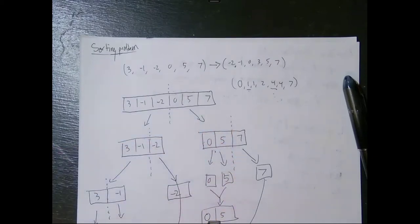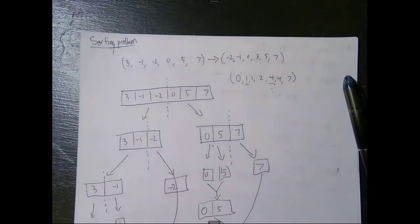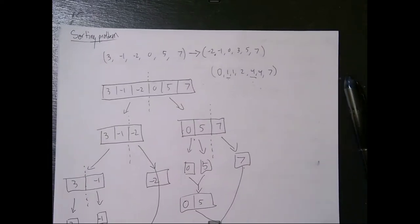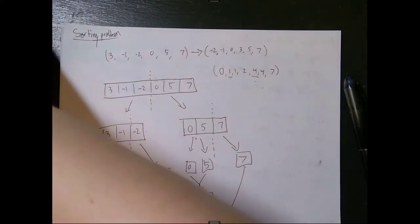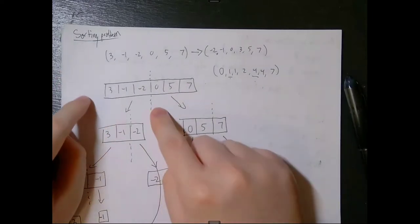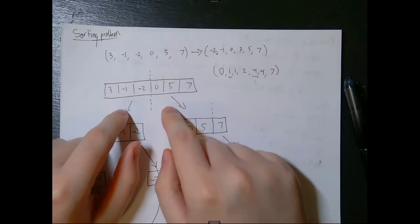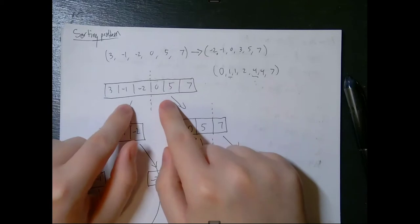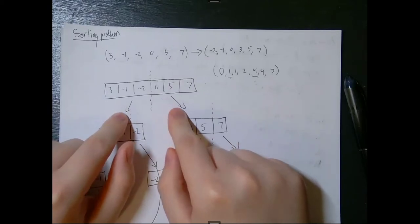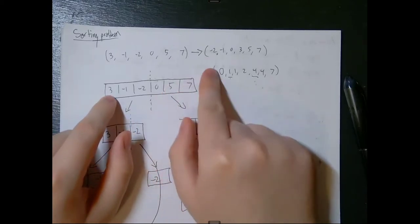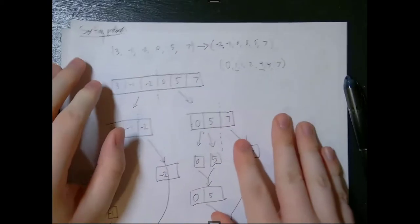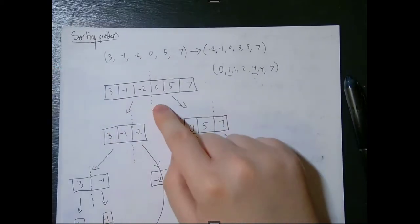The algorithm we're going to focus on today is known as the merge sort algorithm, which you may be familiar with from 202. Basically what this algorithm does is it starts dividing the list in half. We're taking the sequence and representing it as a chain of boxes with values in them next to each other.